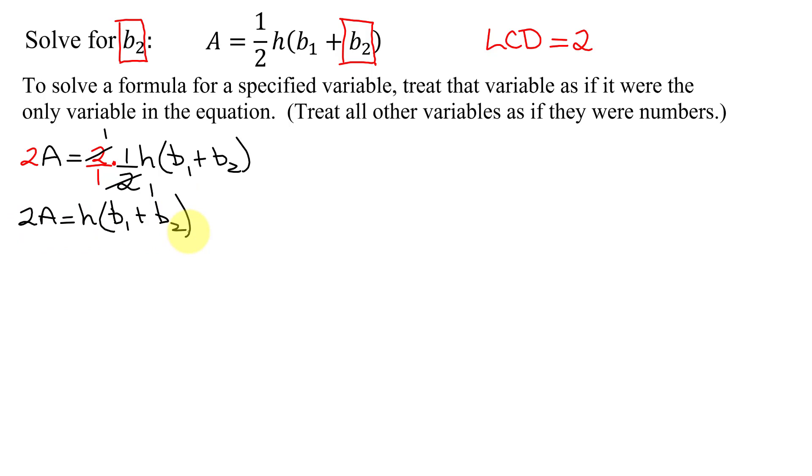And now there's two different ways to go from this point. I'm going to show you both ways. Method 1 isolates the quantity b1 plus b2 on the right-hand side of the equation.